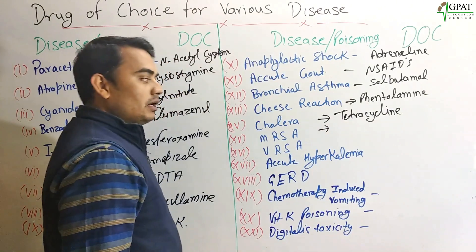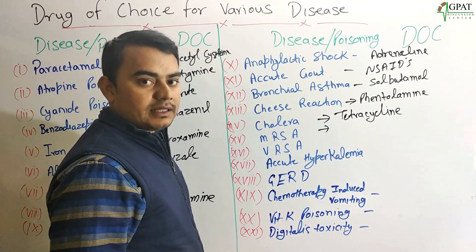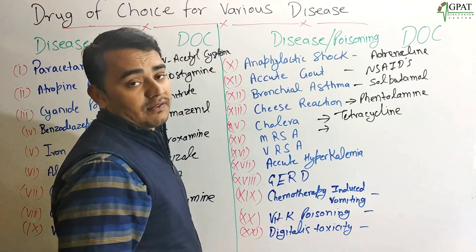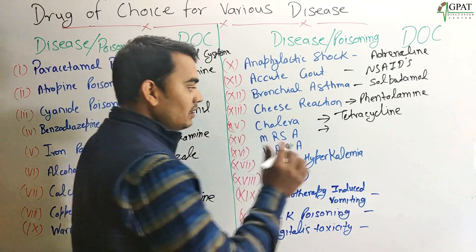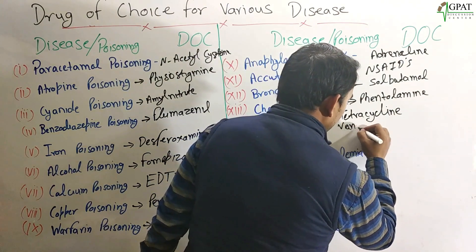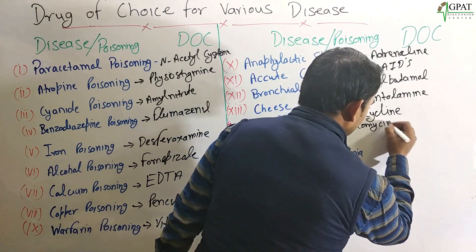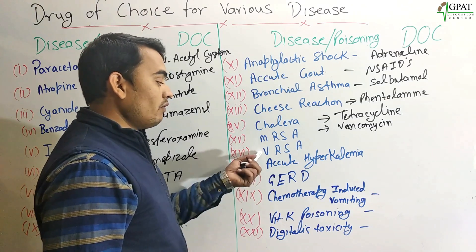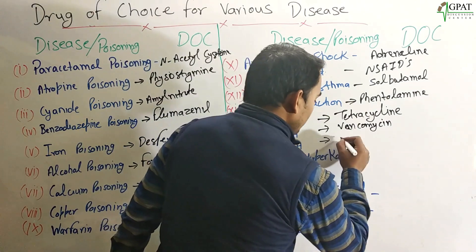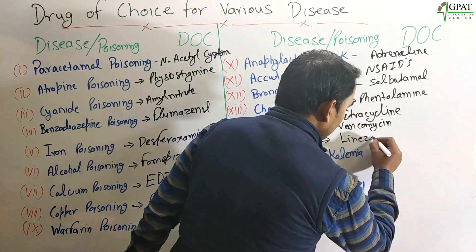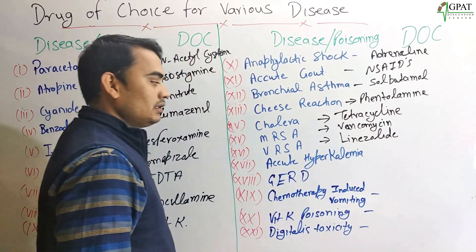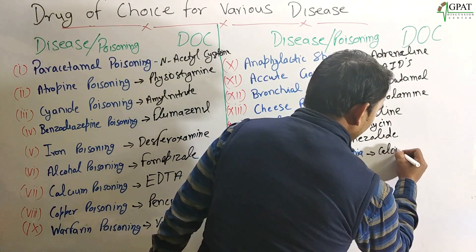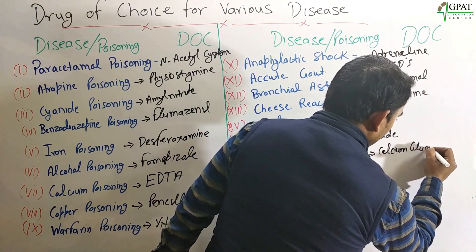Next: MRSA — Methicillin-Resistant Staphylococcus aureus. In Staphylococcus aureus infection, Methicillin is given first. If methicillin resistance develops, that is MRSA, and we give Vancomycin. If vancomycin resistance also develops — Vancomycin-Resistant Staphylococcus aureus — we give Linezolid.